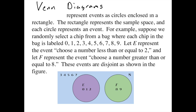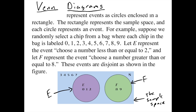A nice visual way to look at probability problems and events is with a Venn diagram. These show events as circles, and the rectangle represents everything that's possible. Here's an example where we're selecting a chip — like a poker chip — that has numbers on it. There are 10 chips numbered zero through nine.